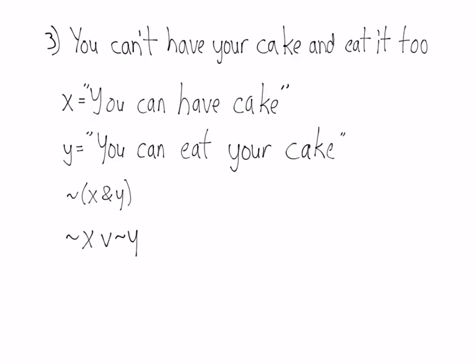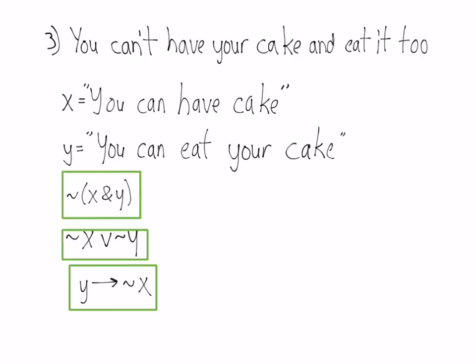If you wrote 'either you can't have your cake or you can't eat your cake,' that's also correct, because the original sentence says you can't both have your cake and eat it, so one of them must be negated. A third way to write this is 'you can eat your cake only if you don't have it.' All three of these are valid translations.